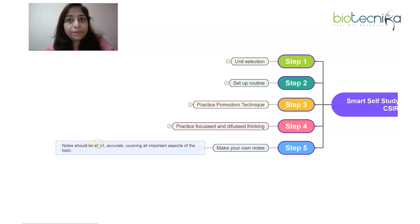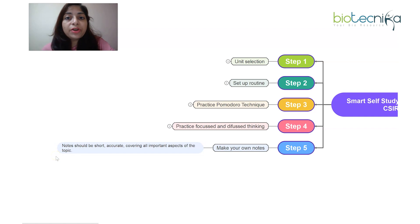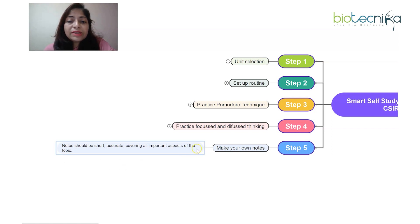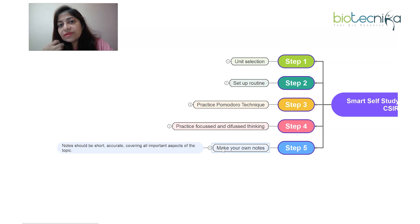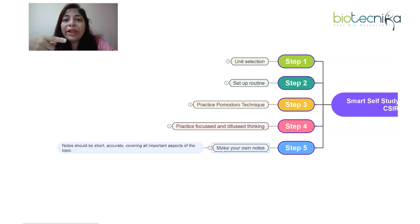Step five is to make your own notes. Your notes should be short, accurate, and cover all important aspects of a topic. If any numerical content is involved, write the formula and one example numerical. Making notes serves two purposes. First, studies have shown that when you write something in your own words — summarizing the content — you involve your brain, so the information gets embedded in memory much faster and is retained for a longer time.